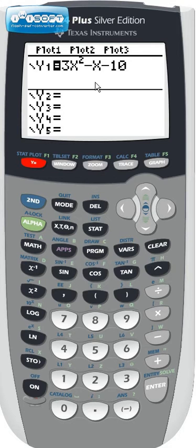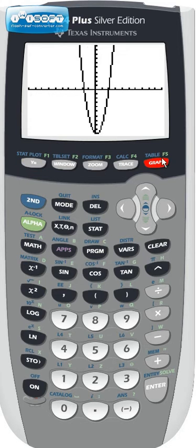First, I'm going to graph this function on a standard window. And I see that there are two x-intercepts, which means there are two real solutions.